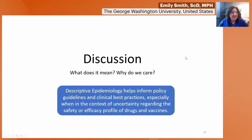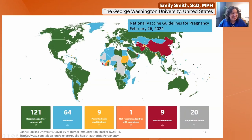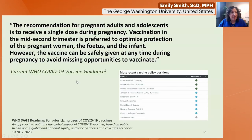This epidemiological data has been important in informing policy. In March 2021, only one country had a vaccination policy for pregnant women. Now the vast majority of countries recommend vaccines in pregnancy. WHO not only recommends vaccines in pregnancy but specifically recommends that all pregnant women receive a single dose during pregnancy — whether primary series or booster — ideally mid-second trimester, but at any time to avoid missing the opportunity to vaccinate. Given all the data on excess risk, this is a really important take-home message.